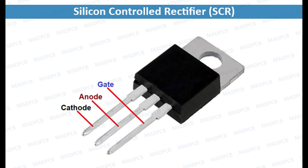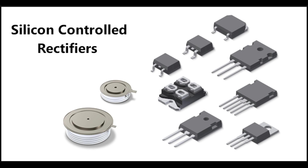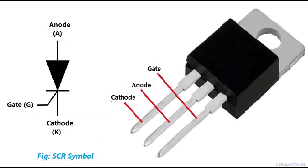Internal construction: Anode — P-type, this is the positive terminal. Cathode — N-type, this is the negative terminal. Gate — P-type, this terminal is used to trigger the SCR. Three PN junctions: Junction J1 between the anode (P-type) and the adjacent N-type layer. Junction J2 between the two inner layers, P-type and N-type. Junction J3 between the cathode (N-type) and the adjacent P-type layer.